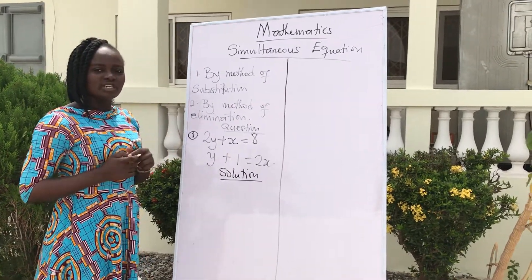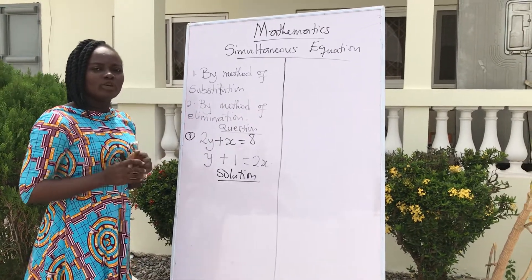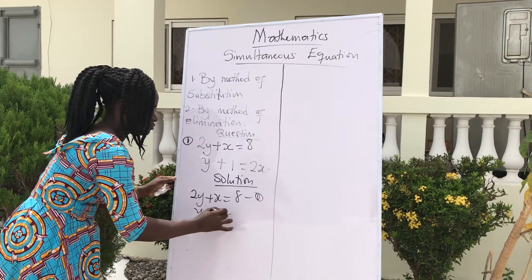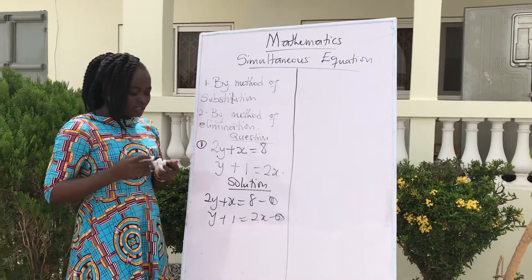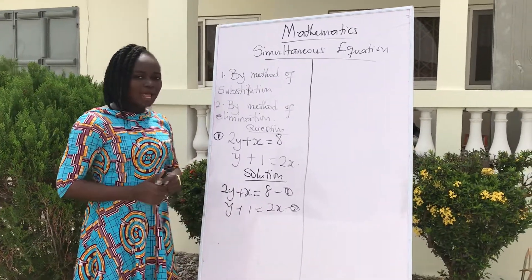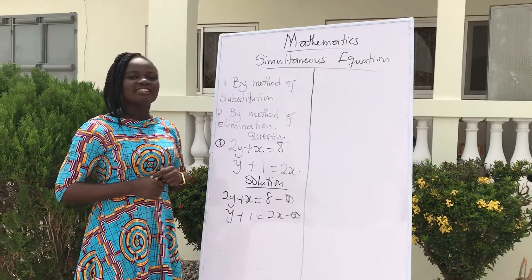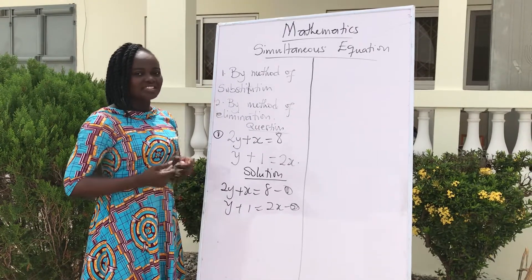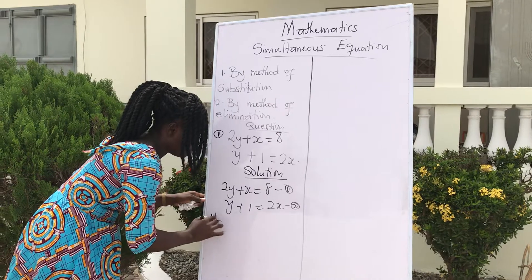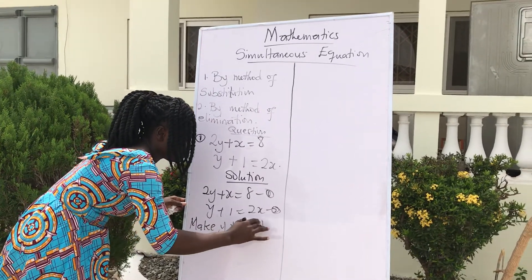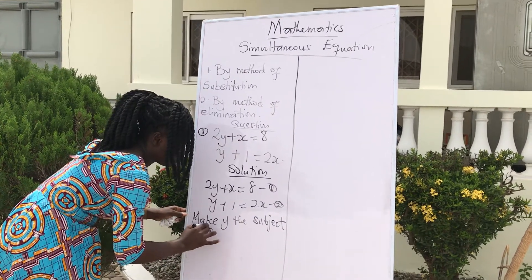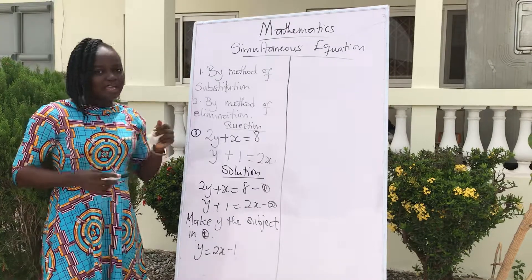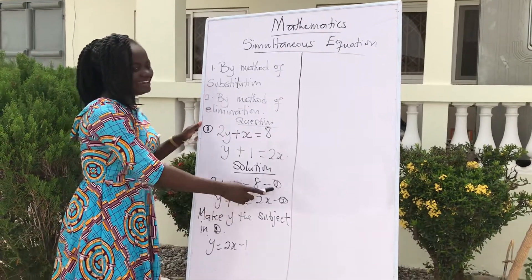By the method of substitution, you have to first label your equations. Secondly, you have to make one of the variables in any of the equations the subject. Looking at our equations, let's choose equation 2 and make y the subject in equation 2.